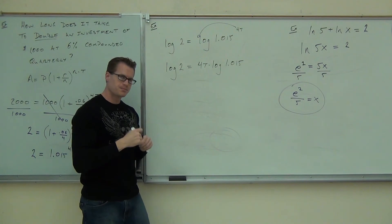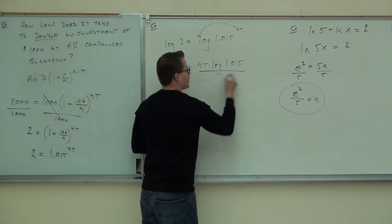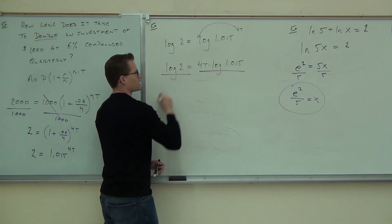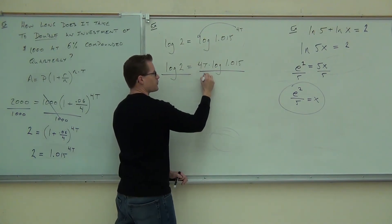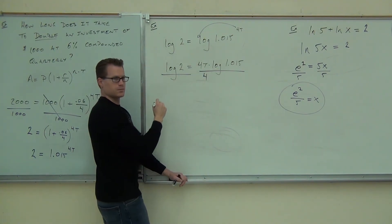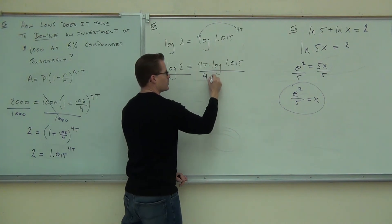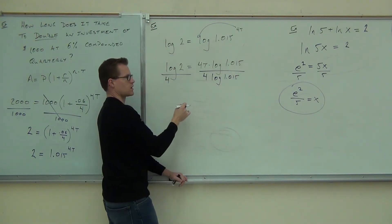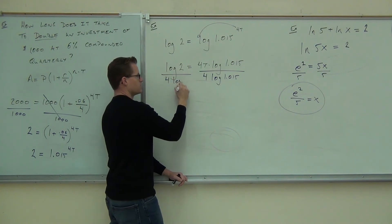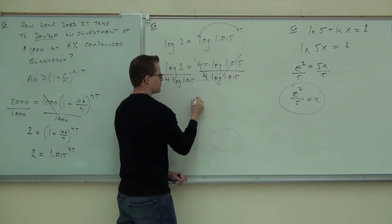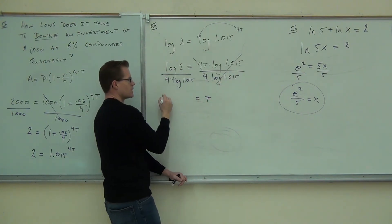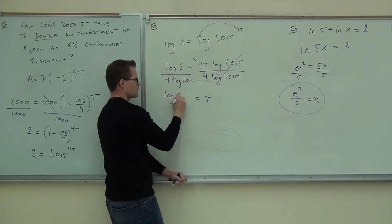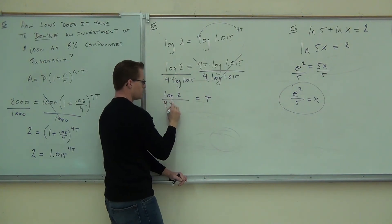Here's some fancy math. Divide by all the numbers you need to get rid of on both sides. So, for instance, you need to divide by a four to get rid of the four. Agree? You also need to divide by a log one point zero one five to get rid of the log one point zero one five. Do that on both sides. You get T on the left. You get log of two over four log of one point zero one five.